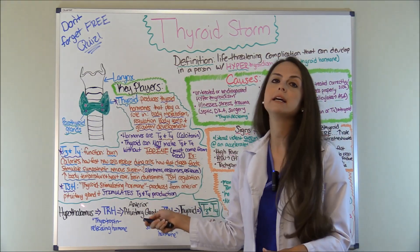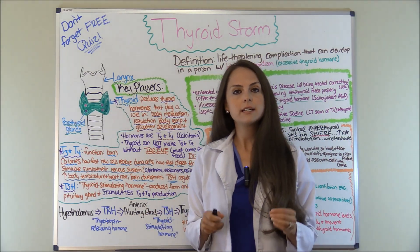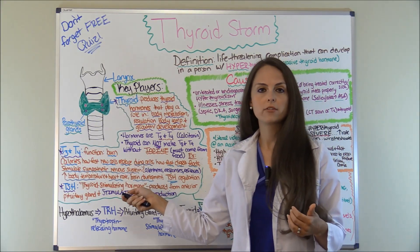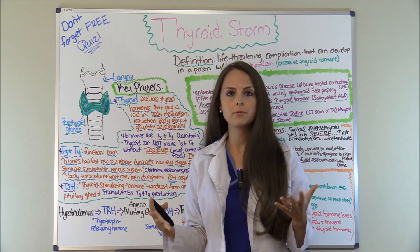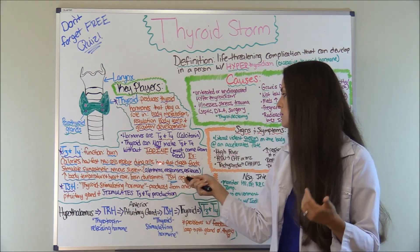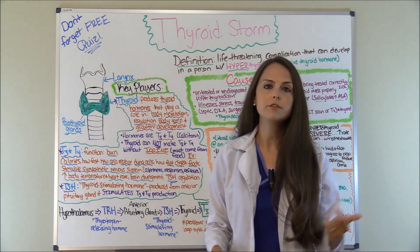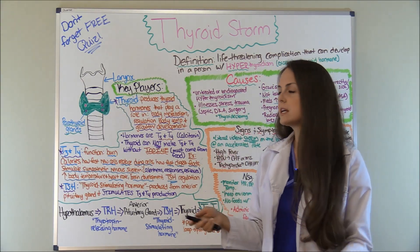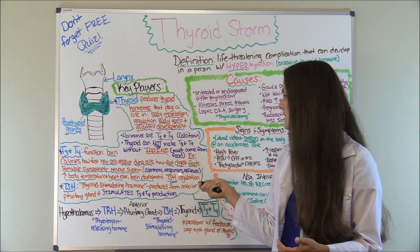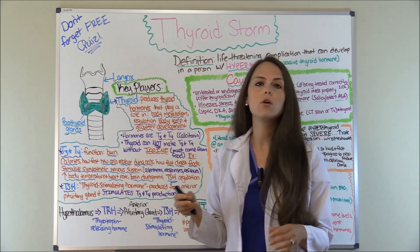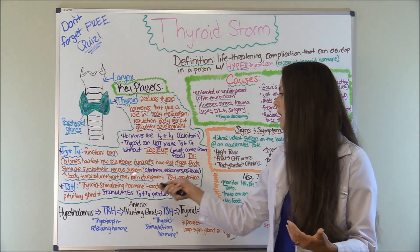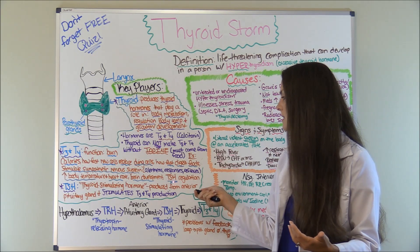Now what does T3 and T4 do? T3 and T4 function to allow us to burn calories, so it helps with our metabolism rate. It also helps determine how fast we replace new cells with dying ones, how fast we digest our food, it stimulates our sympathetic nervous system, which helps us stay alert, our responses, our reflexes. It also plays a role in increasing our body temperature, our heart rate, our blood pressure, brain development, and regulates TSH.